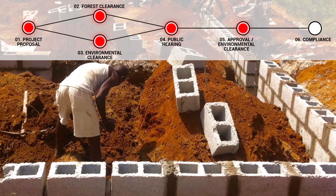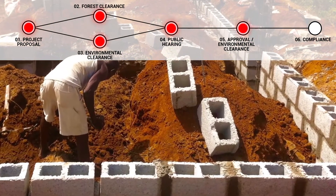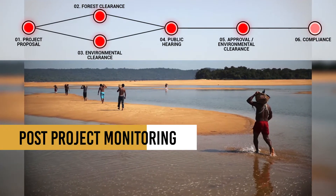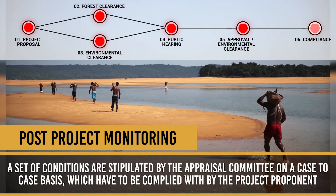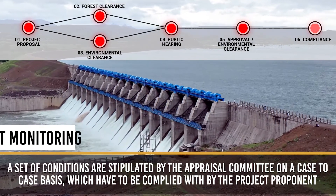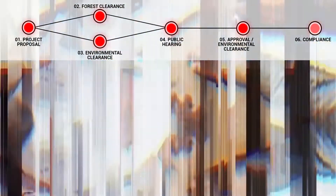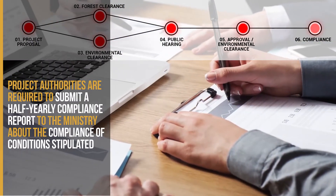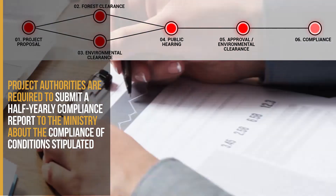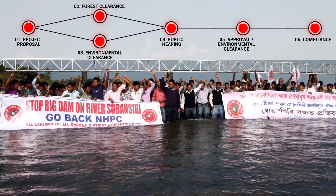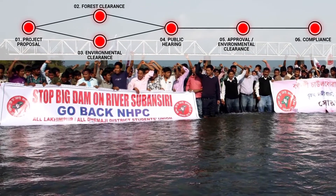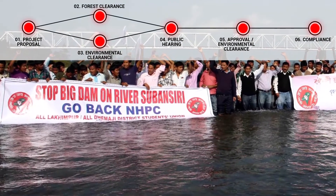Post-project monitoring: whenever a project is given environmental clearance, a set of conditions are stipulated by the appraisal committee on a case-to-case basis, which have to be complied with by the project proponent. The project authorities are required to submit a compliance report to the Ministry about the compliance of conditions stipulated. Cases of non-compliance of the recommendations and conditions by cleared project units are brought to the notice of the Ministry, which may initiate action against the project authorities.